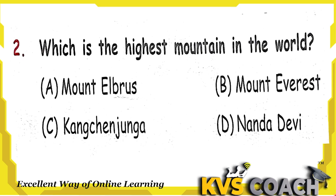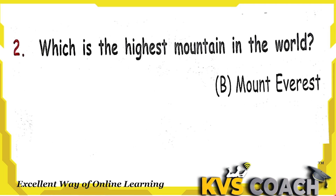Next question: which is the highest mountain in the world? Option A, Mount Albrecht — this is the highest peak of Europe or Russia, but not of the world. Option B, Mount Everest — yes, this is the highest mountain in the world. Option C, Kanchanjangha — this is the third highest mountain. Option D, Nanda Devi. So the right answer is option B, Mount Everest.